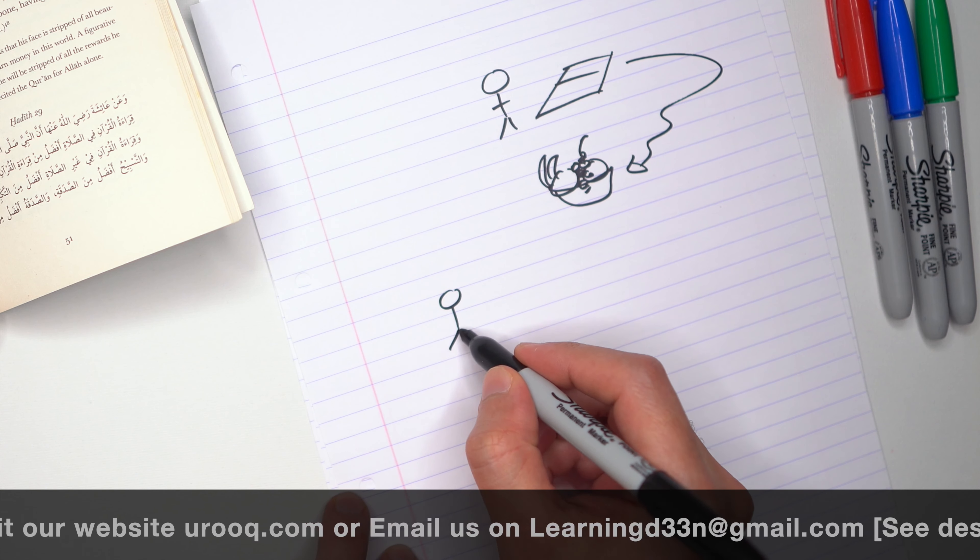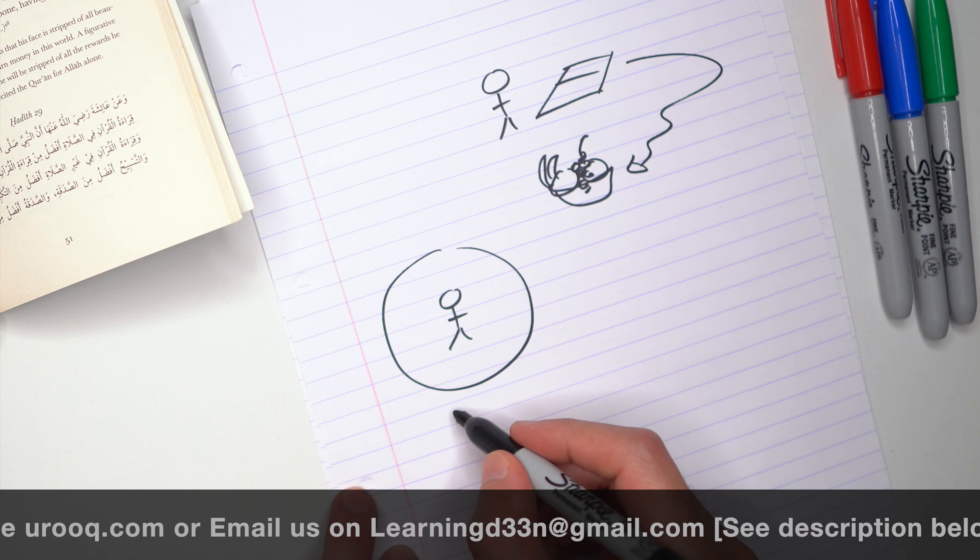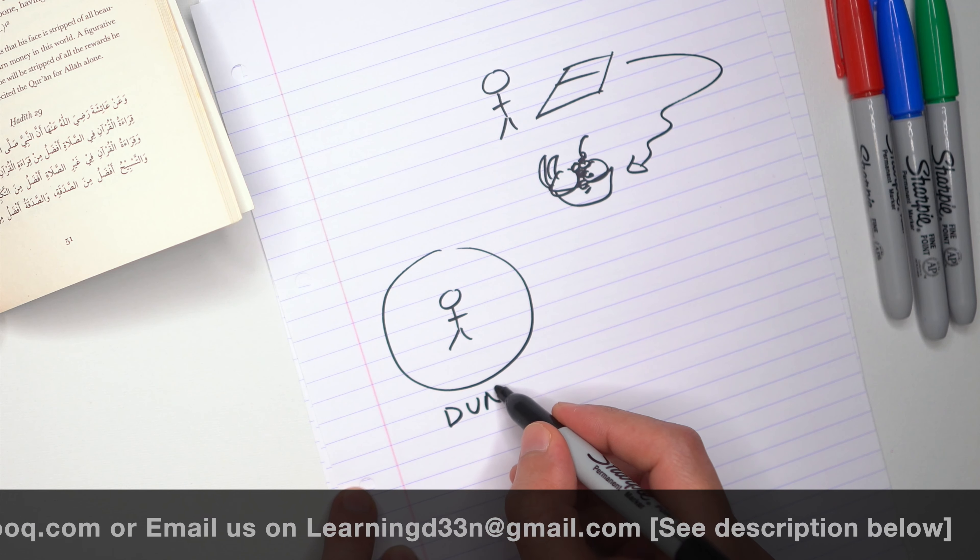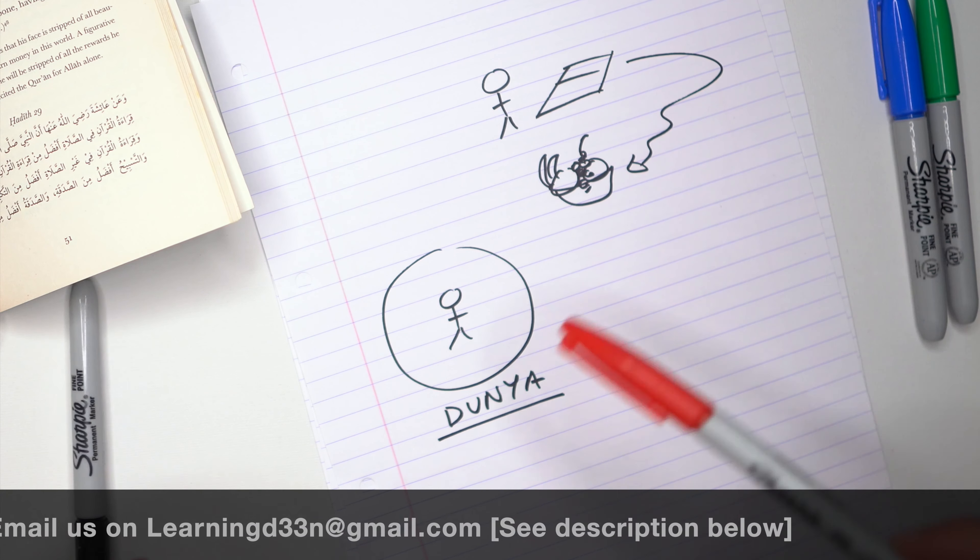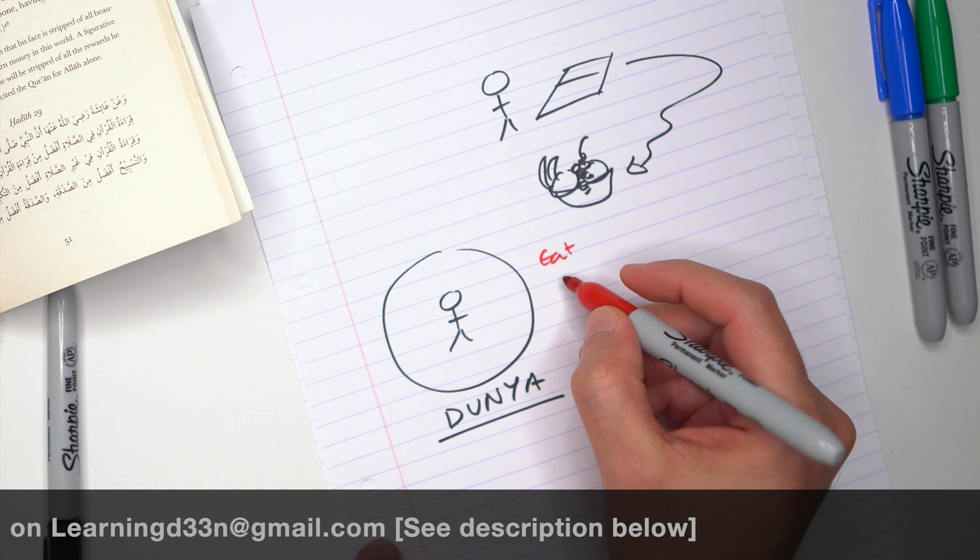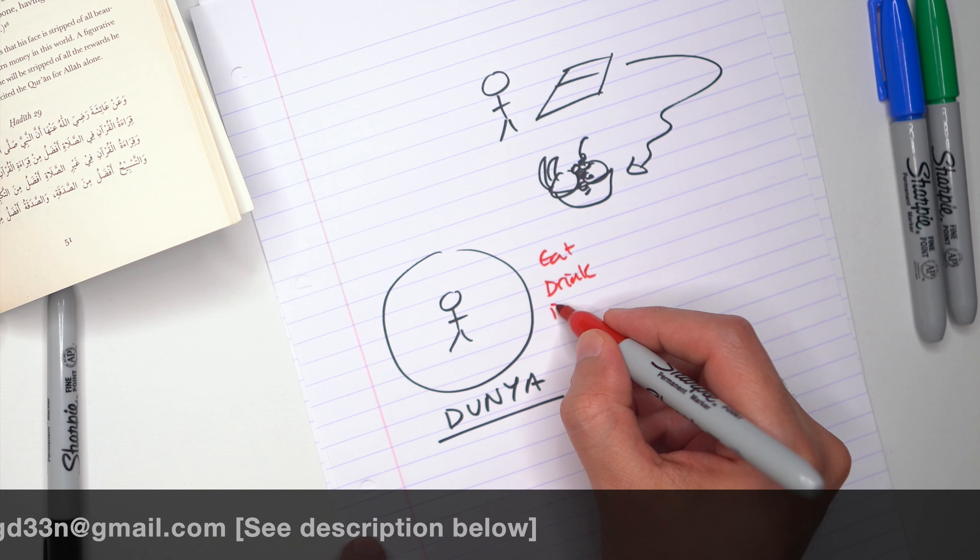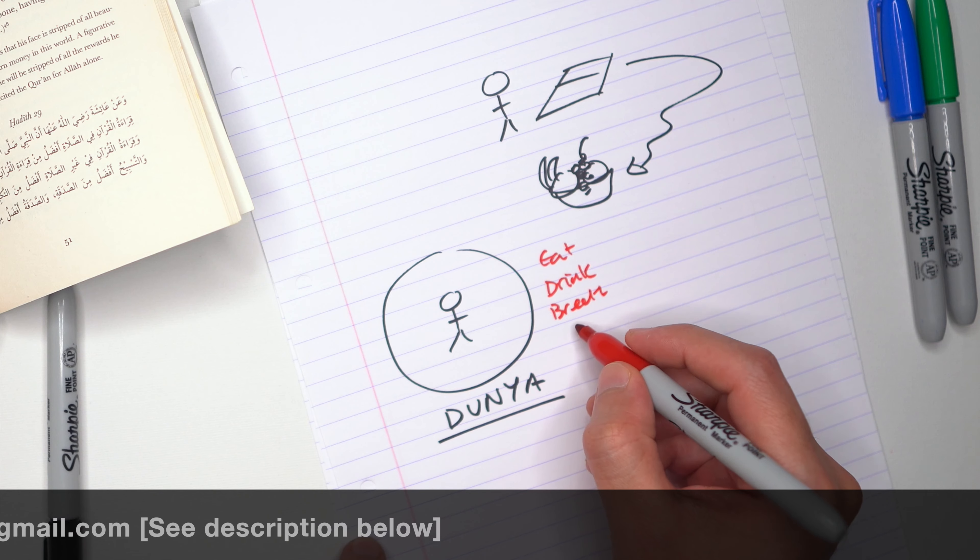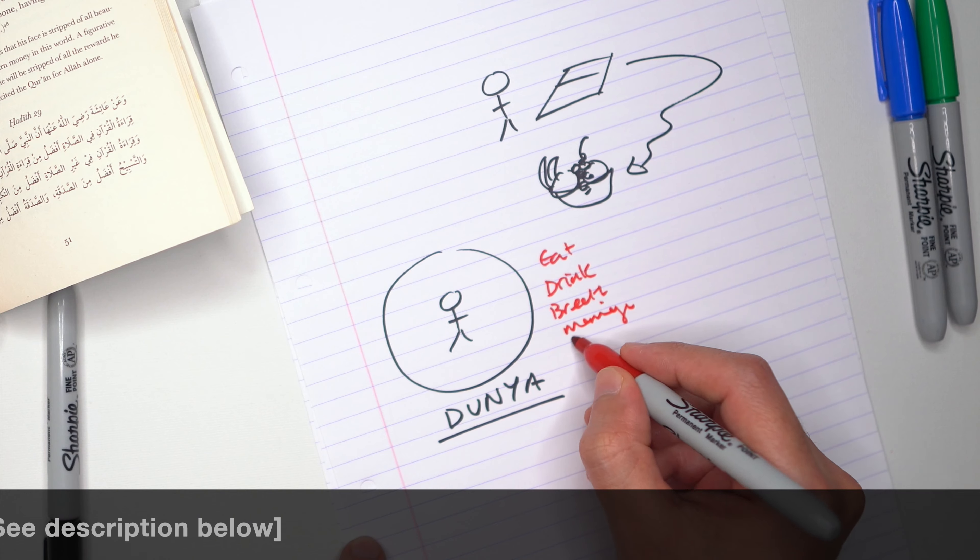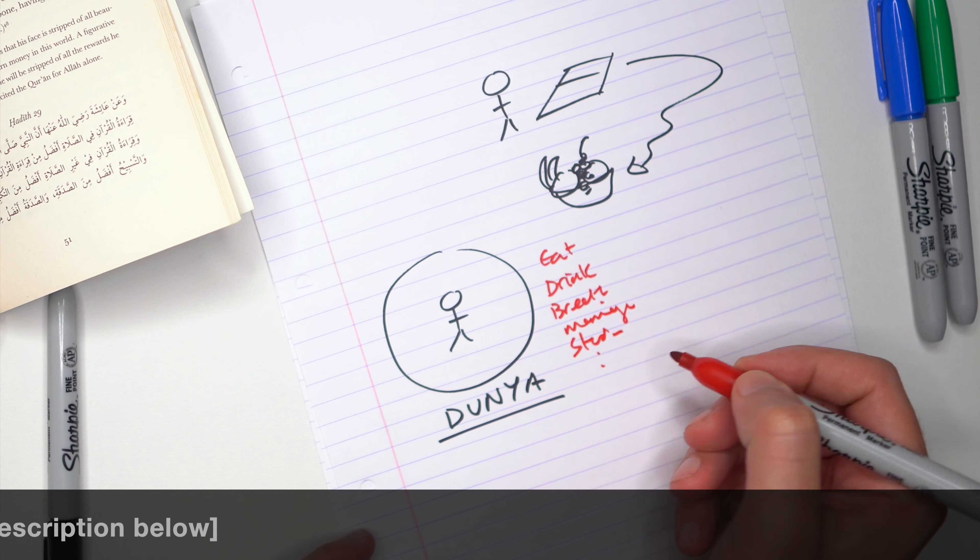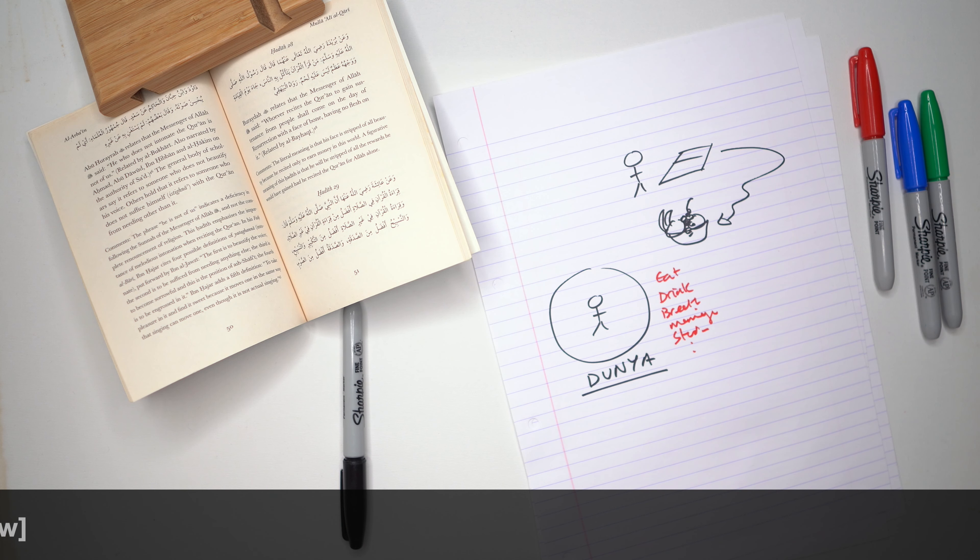Humans have to live in the dunya. Let's say for example, this is dunya. Humans have to live within this; you can't escape. Every human being has to eat, drink, breathe, and do all the other things that humans do - marriage, study, and so forth.